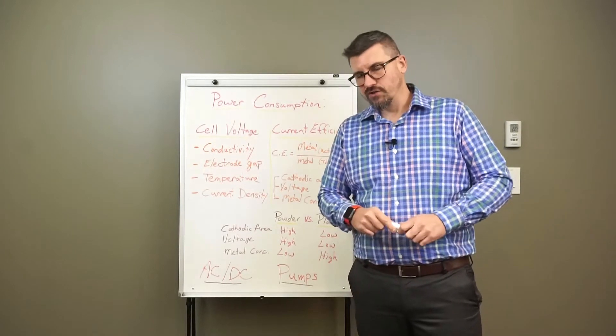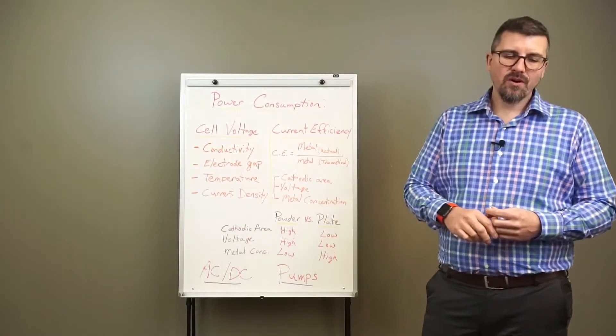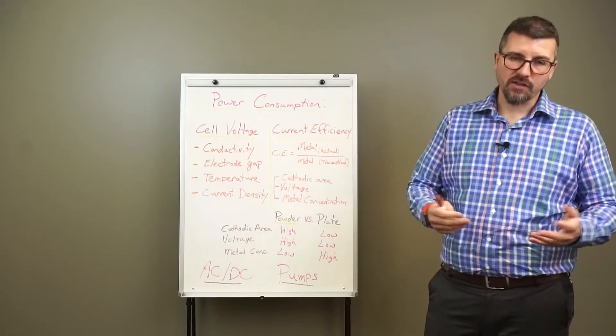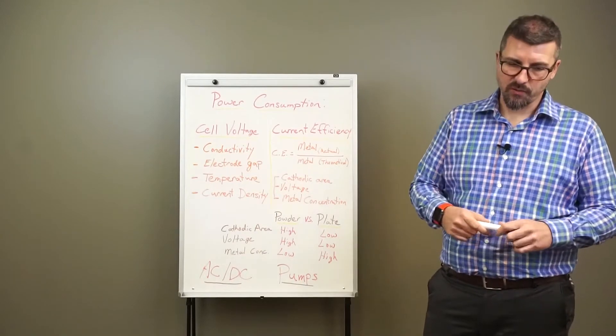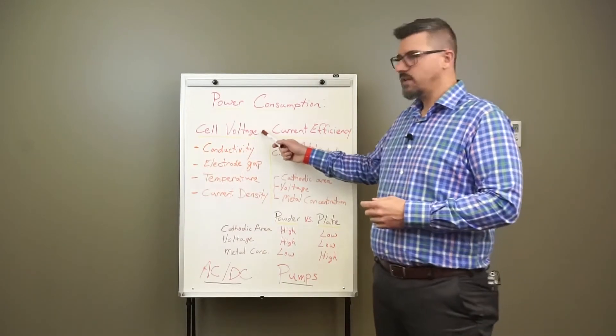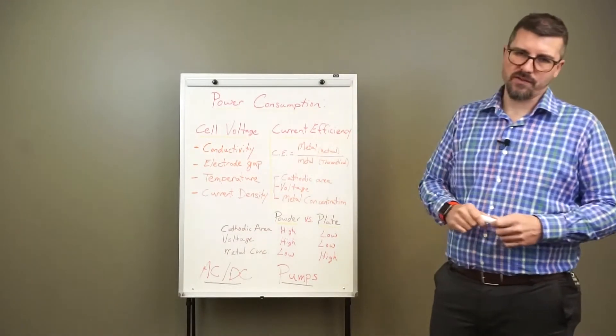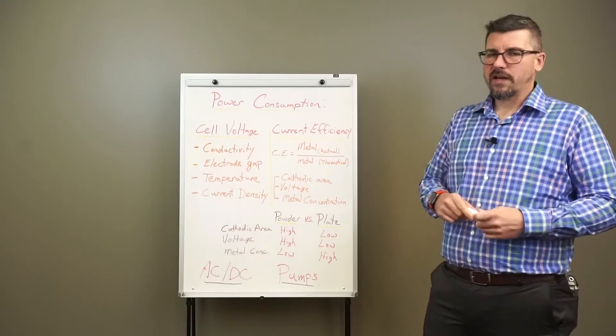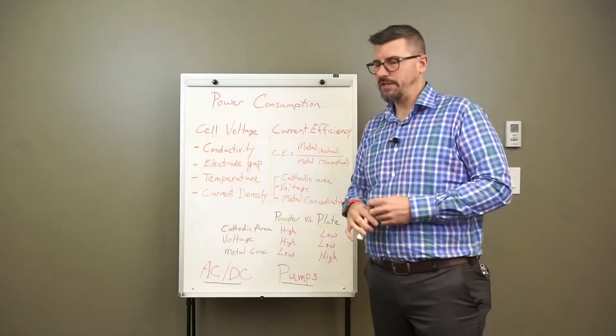It's a really interesting question because it's important not only for EMU electrowinning, but also for conventional electrowinning. Power consumption really depends on two factors: the cell voltage and the current efficiency.